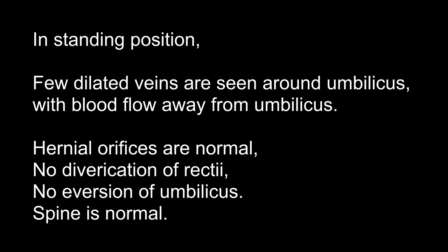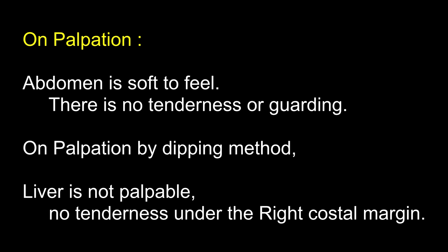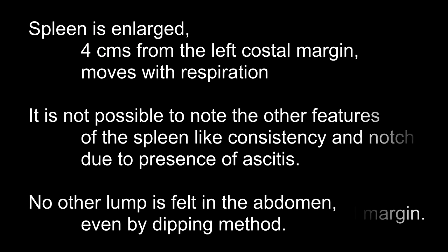The spine is normal. Lordosis can cause false protrusion of the abdomen; also severe ascites can cause lordotic gait and secondary lordosis. On palpation, the abdomen is soft, no tenderness. On palpation by dipping method, liver is not palpable. Spleen is enlarged 4 cm from the left costal margin; it is not possible to note other features like consistency and notch due to the presence of ascites. No other lump felt in the abdomen. Malignant lumps in malignant ascites may arise from the intestines, liver, and in females from the ovaries.